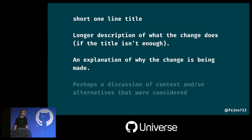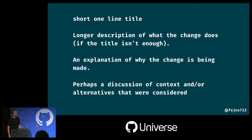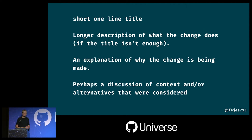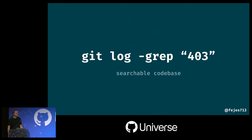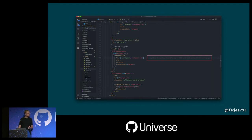You should also include a discussion of the context and alternatives that were considered. We put a lot of effort into writing code, and without that context future contributors won't understand what's happening. Writing commits this way is very valuable. For power users you can search the whole codebase; for average users or beginners like me, you can install extensions like GitLens, which display the commit message next to each highlighted line of code. This way every single line is documented — which is exactly what you want.